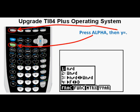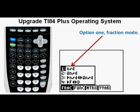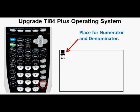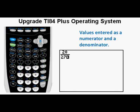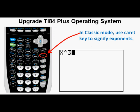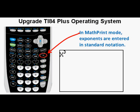We'll now use the new operating system by making a fraction. Access the fractional form by pressing the Alpha key, then the Y= (F1) key at the far upper left of the keypad. Option 1 is Fraction Mode. When we press enter, we get two open spaces for the numerator and denominator in standard fraction format — here with 21 in the numerator and 27 in the denominator. In classic mode, exponents are entered using the caret key. In MathPrint mode, the caret key still works but the exponent appears in familiar superscript notation to the upper right of the variable.